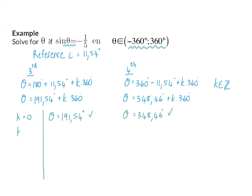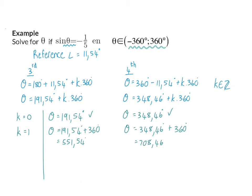If we substitute k with one, we will add 360 degrees to both quadrants. That will give us the options of 551.54 degrees and 708.46 degrees. Neither of these two are in the given interval.